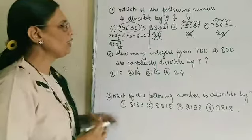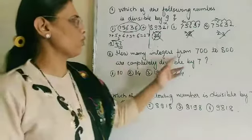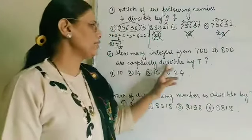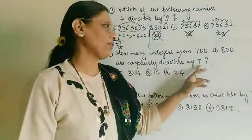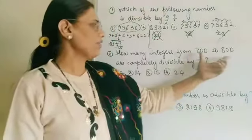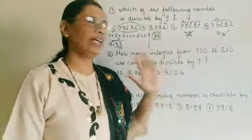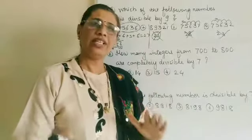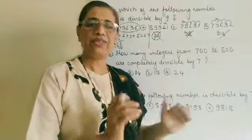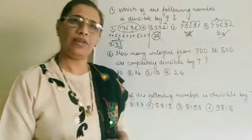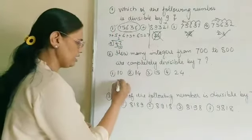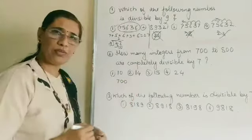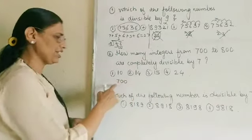Second question: How many integers from 700 to 800 are completely divisible by 7? We need to find all integers between 700 and 800 that are completely divisible by 7. Definitely 700 is divisible by 7, because 7 times 100 is 700.